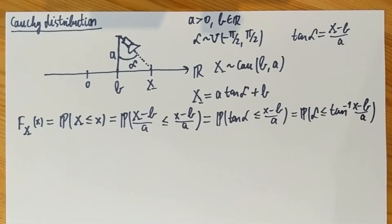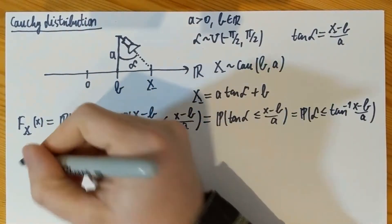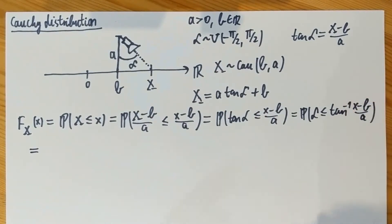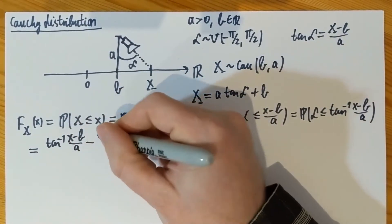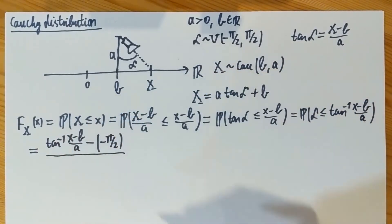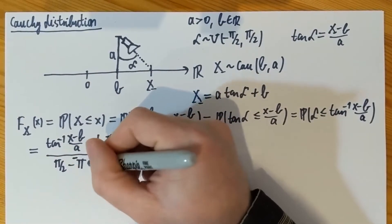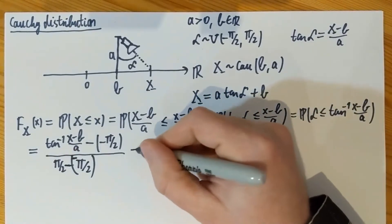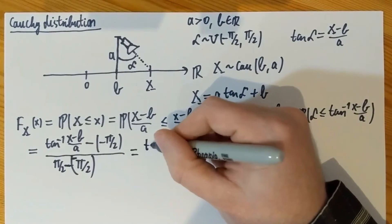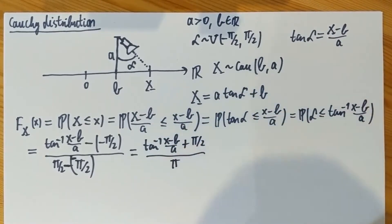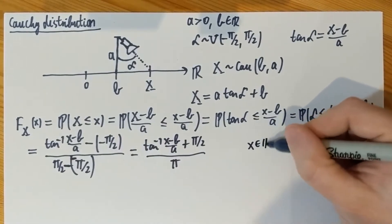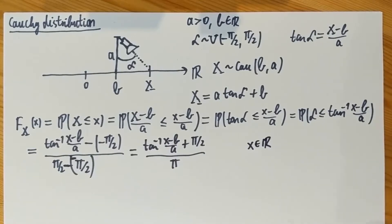From here it's quite easy because alpha is uniform on that interval and we know the distribution function of the uniform. The inverse tangent falls in the interval from minus pi half to pi half, so the uniform CDF is straightforward: take the inverse tangent value, subtract the left end of the interval, and divide by the total length of the interval. This gives inverse tangent of (x minus B over A) plus pi over 2, all divided by pi. That's the distribution function for all x in the real line, going from 0 at minus infinity to 1 at plus infinity.